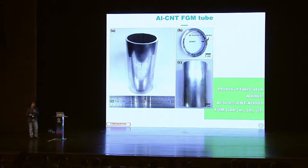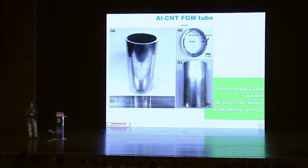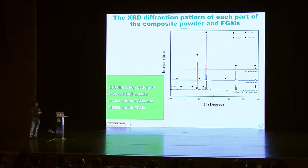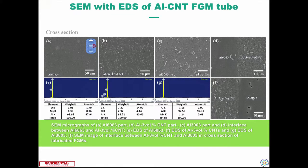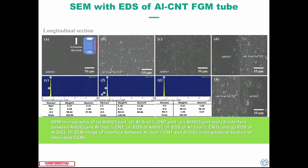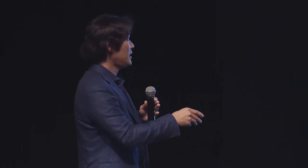For example, the 6000 series has high strength, and the inside 3000 series has very nice anti-corrosion properties. Within this material, I added 3 volume percent carbon nanotube to strengthen the properties. We successfully fabricated this in a mass production line. We observed the interface between those materials and got a very smooth and well-interlocked interface.